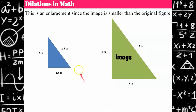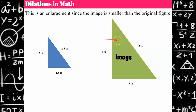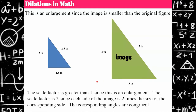Here's another example — this is an enlargement. The green is labeled as the image. Two corresponds to four — two times two is four — so the other sides also need to be increased by a factor of two. Two and a half multiplied by two is five, and one and a half multiplied by two is three. Therefore, this is an enlargement with a scale factor of two. Since the scale factor two is greater than one, we know it's an enlargement, and we can assume corresponding angles are congruent.